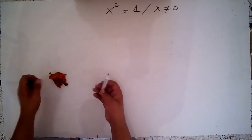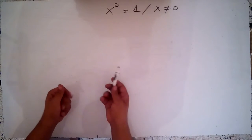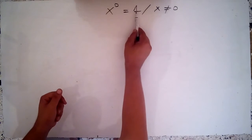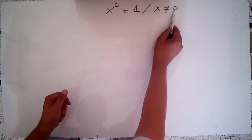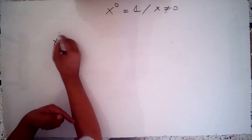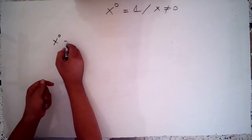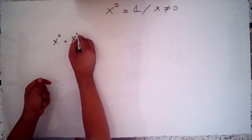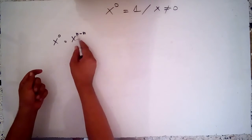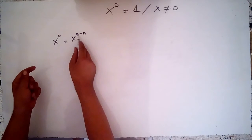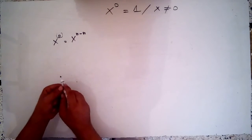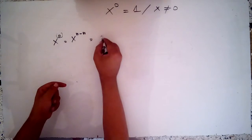In this video I will show you why x power 0 is equal to 1, for each x different of 0. If you write x power 0, this equals x power n minus n, because n minus n, for each real number n, is equal to 0.